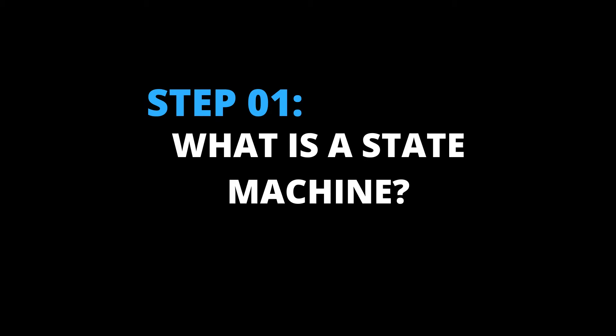Step number one: what is a state machine? A state machine is a mathematical model of computation. This state machine can be in exactly one state at any given time, which is also known as a finite state machine or FSM for short. Based on the current state and a given input, the machine performs a transition and produces outputs. Because of this, they can be used in many autonomous applications.